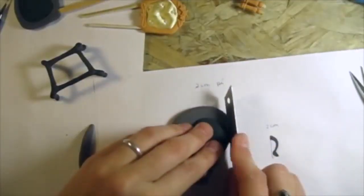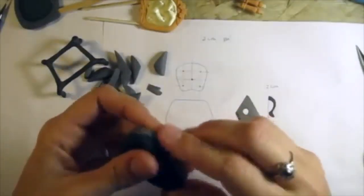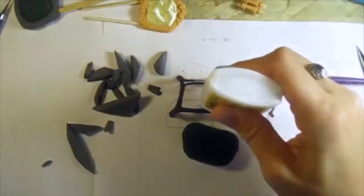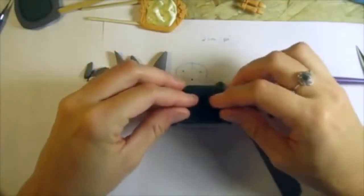Do the same with the seat cushion, but cut it without a border. Glue the seat cushions on the legs.